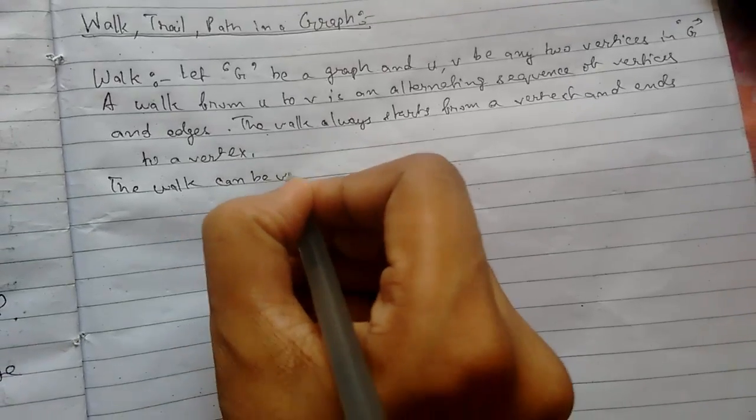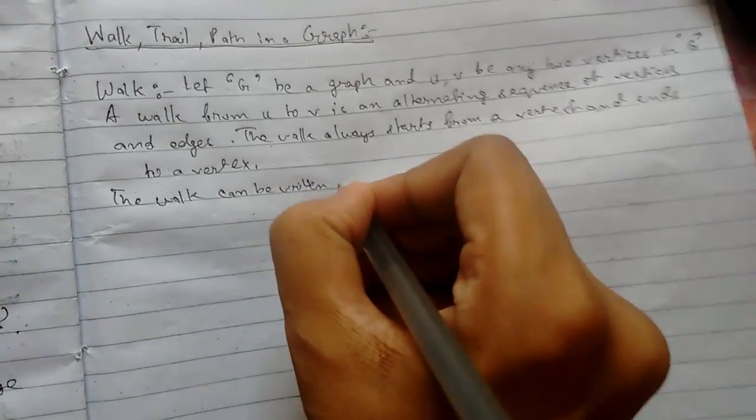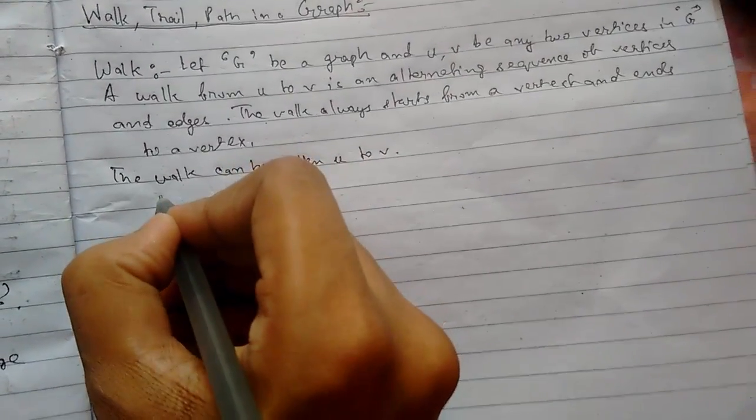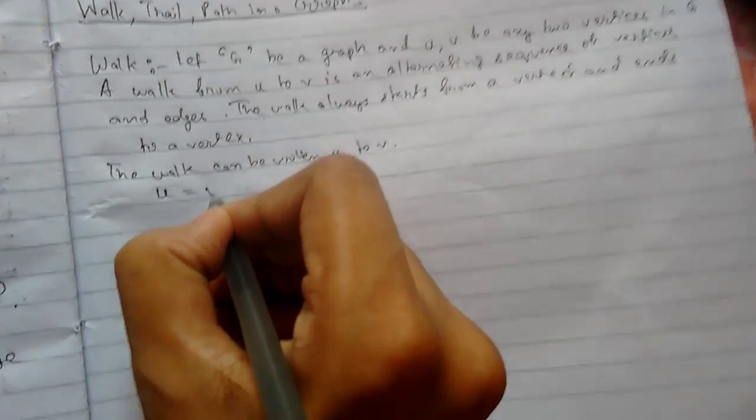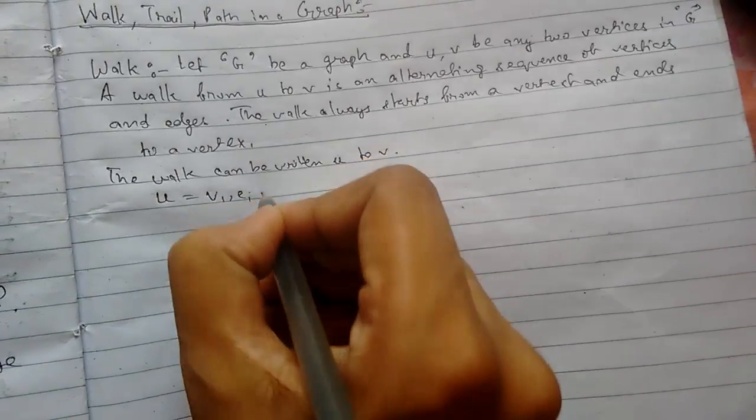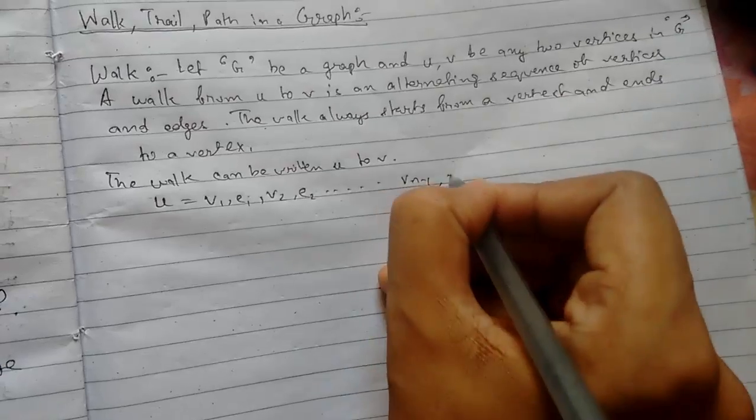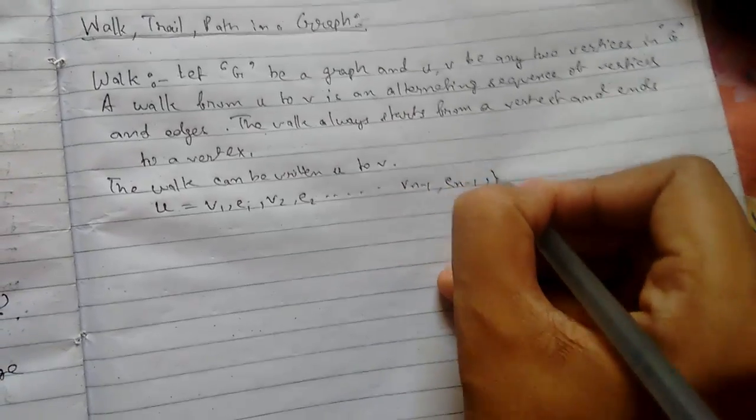written from u to v like this: v1, e1, v2, e2, up to v(n-1), e(n-1), vn.